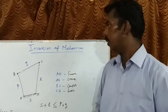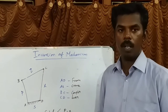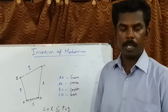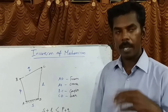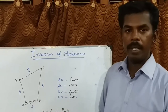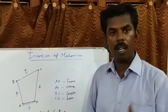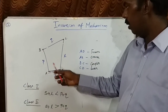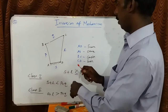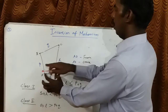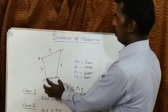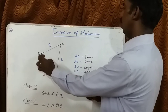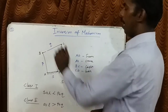Next, inversions of mechanism. Different mechanisms obtained by fixing different links of a kinematic chain are known as inversions. If you take link AD fixed — the shortest link fixed — you can get a double crank mechanism. Similarly, AB fixed gives a crank-rocker mechanism. BC fixed gives a double crank mechanism.